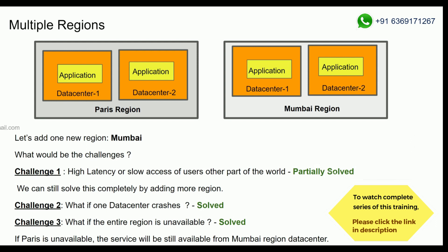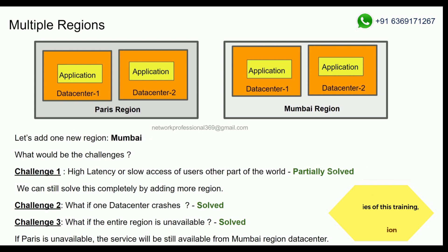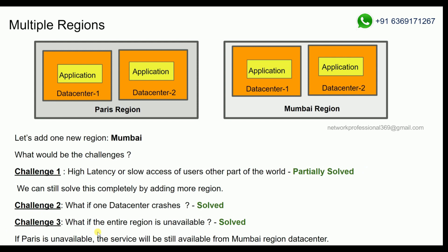But still, New York users may have high latency. What we can do in the same scenario is deploy the same application in Newark also. So people in and around Newark, or the United States, can have better access. This is the challenge we can solve by deploying the application in multiple regions. Now, with two regions or more, we can solve it. These are the main challenges we address with regions.